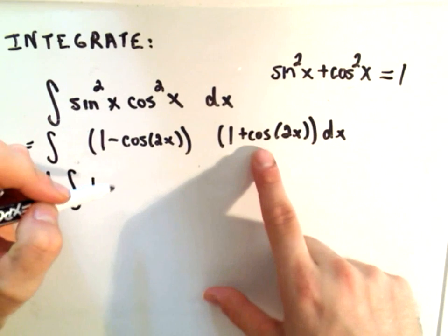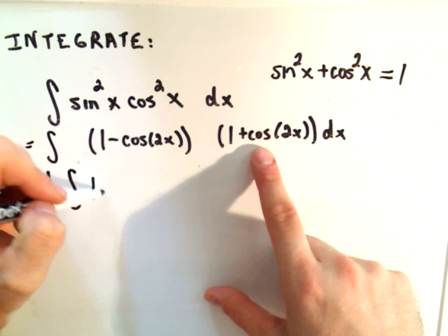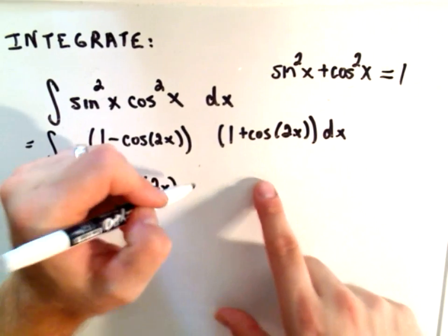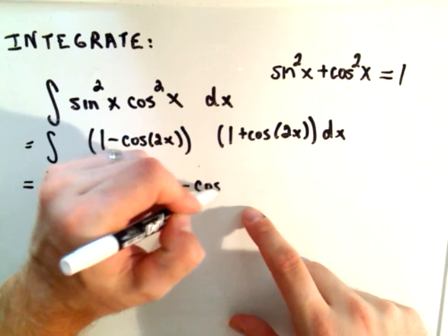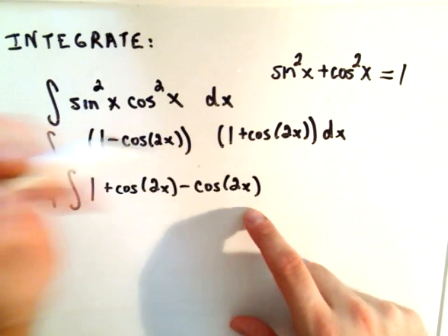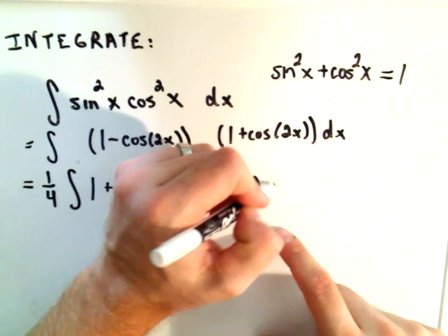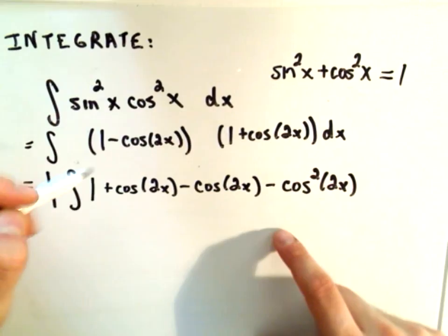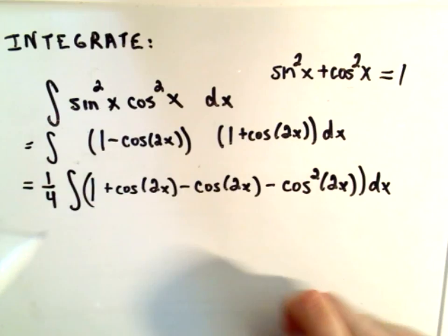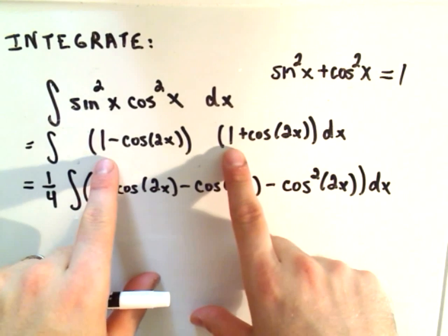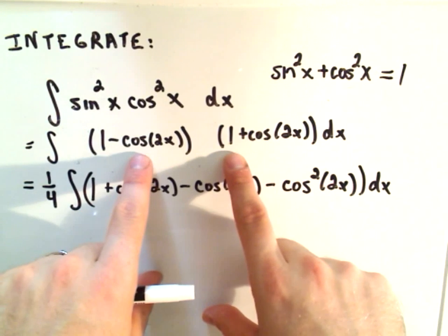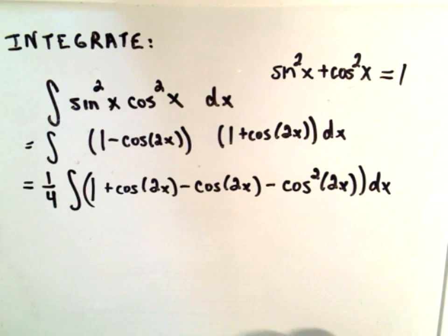One times one gives me one. We'll get a positive cosine 2x, then a negative cosine 2x, and then we'll be left with a negative cosine squared of 2x term, all of that dx. I'm just FOILing out the one, the positive cosine 2x, the negative cosine 2x, and the negative cosine squared.